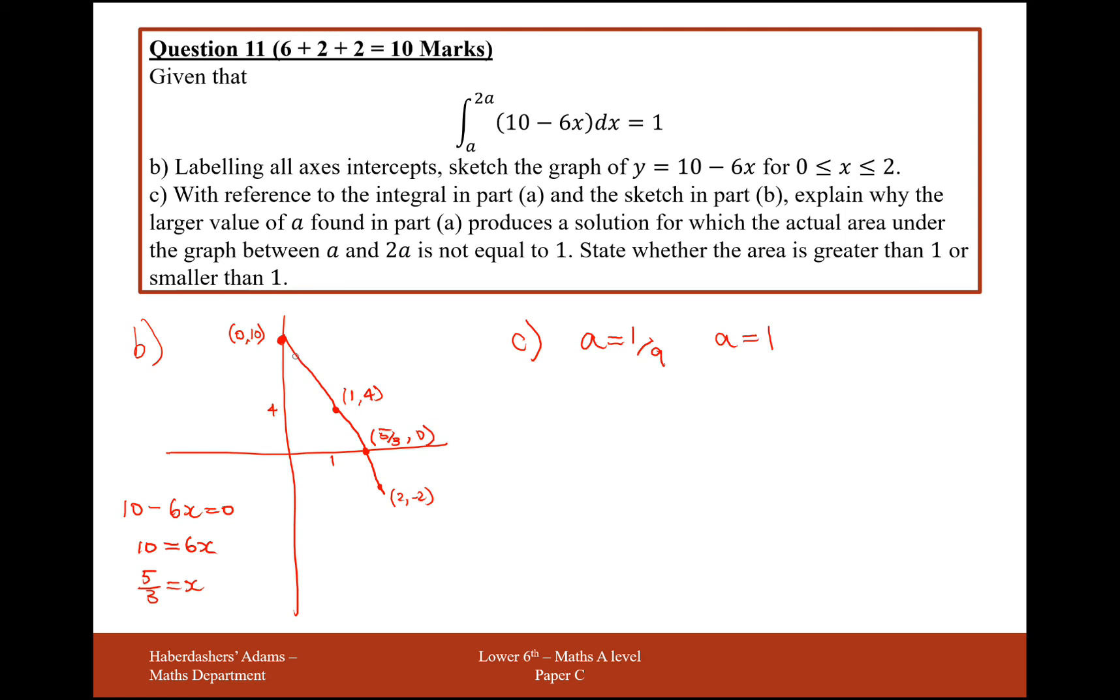So we have either a value here at 1 ninth, and then the 2A value is just going to be 2 ninths. So what we're going to have either is this area here is going to be an area of 1, or when A is 1, 2A was equal to 2. So in which case here, we're going to be working out this area and this area here.